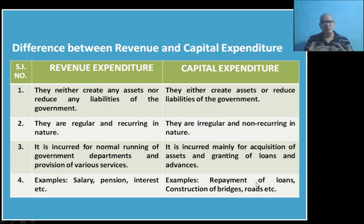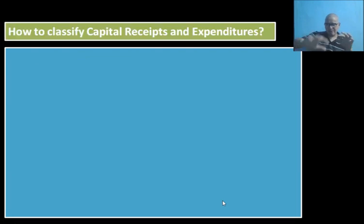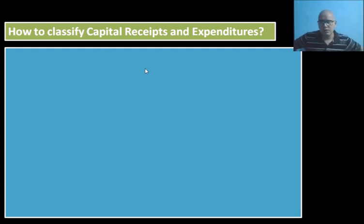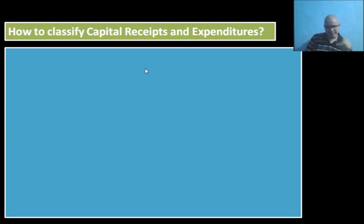Hope you understood everything until here. Now I have tried to give you a simple formula to differentiate between capital receipts and capital expenditures. In previous years' question papers from CBSE's website, you will often find questions like: 'Identify whether the following is a capital receipt or revenue receipt — give reasons for your answer,' or 'Identify whether it is capital expenditure or revenue expenditure and give reason.' If you classify it correctly but are unable to give proper reason, you will not be getting any marks at all.